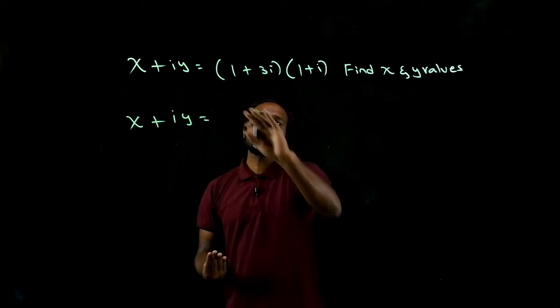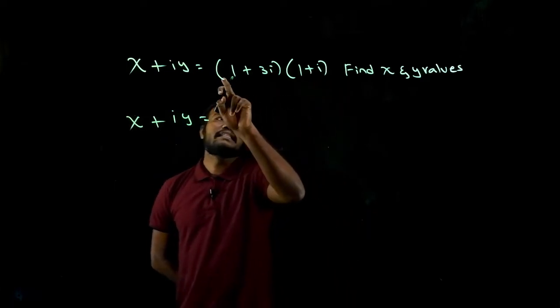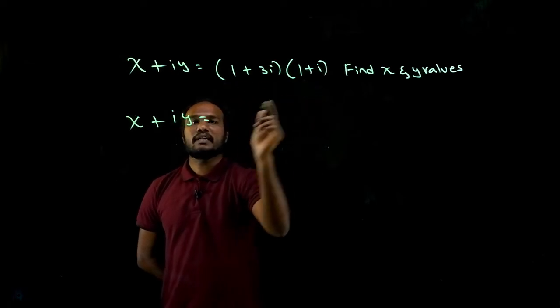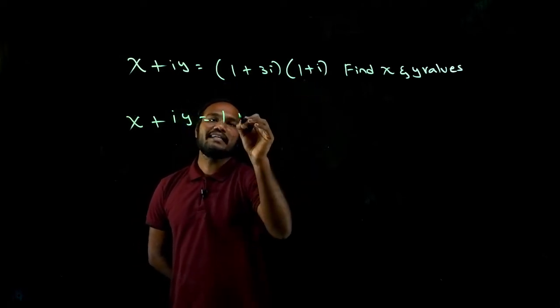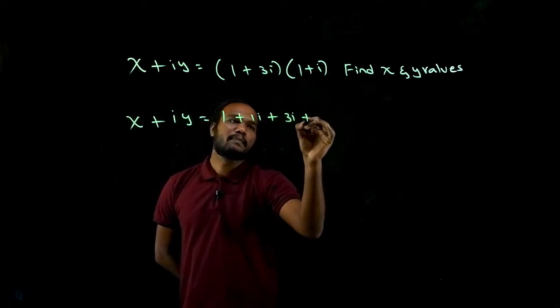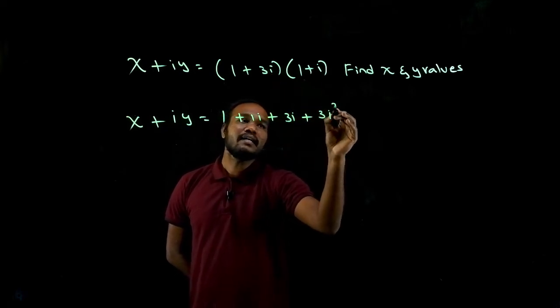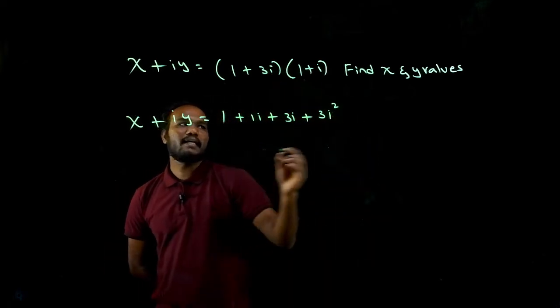Let's convert these two complex numbers in this form. So how to do that? Just multiply this into this number. One into one is one, one into i is one i. Again, three i into one is three i, plus into plus is plus. Three into one is three, i into i is i square.